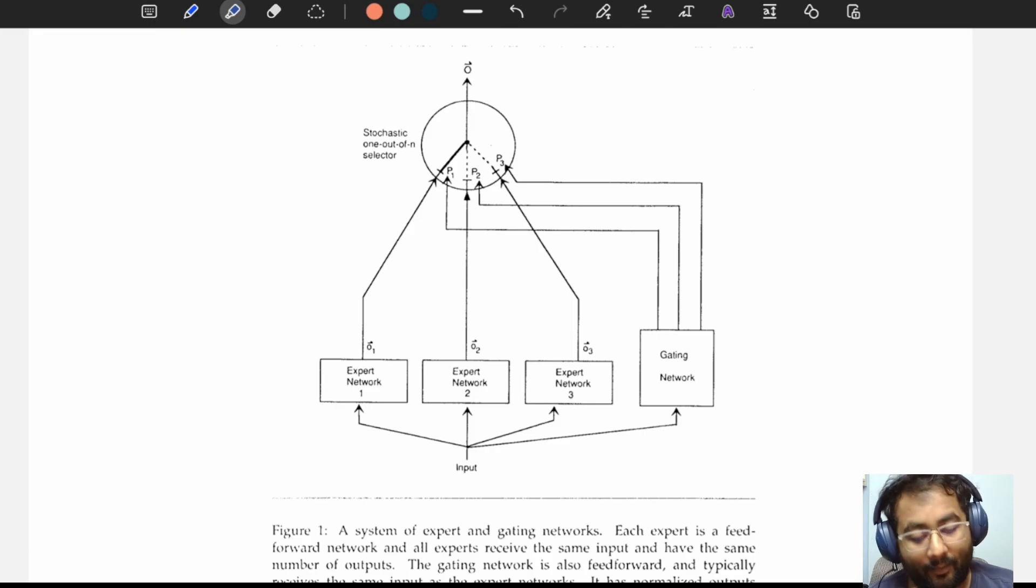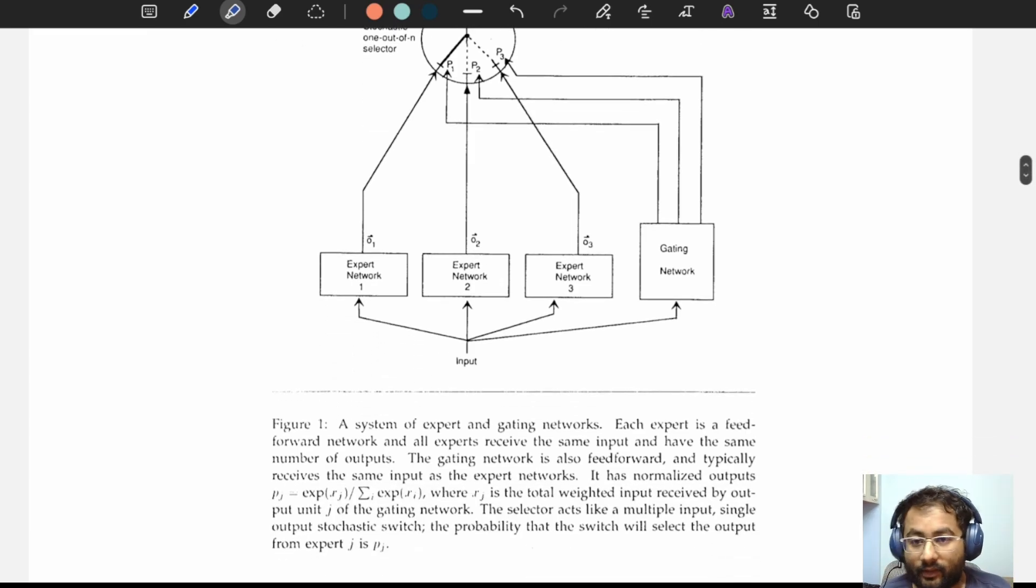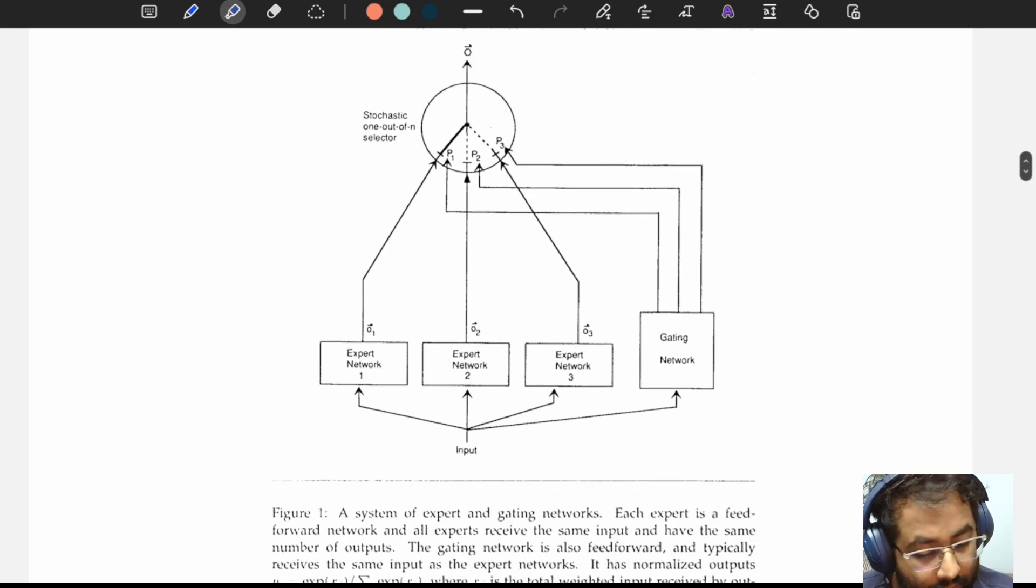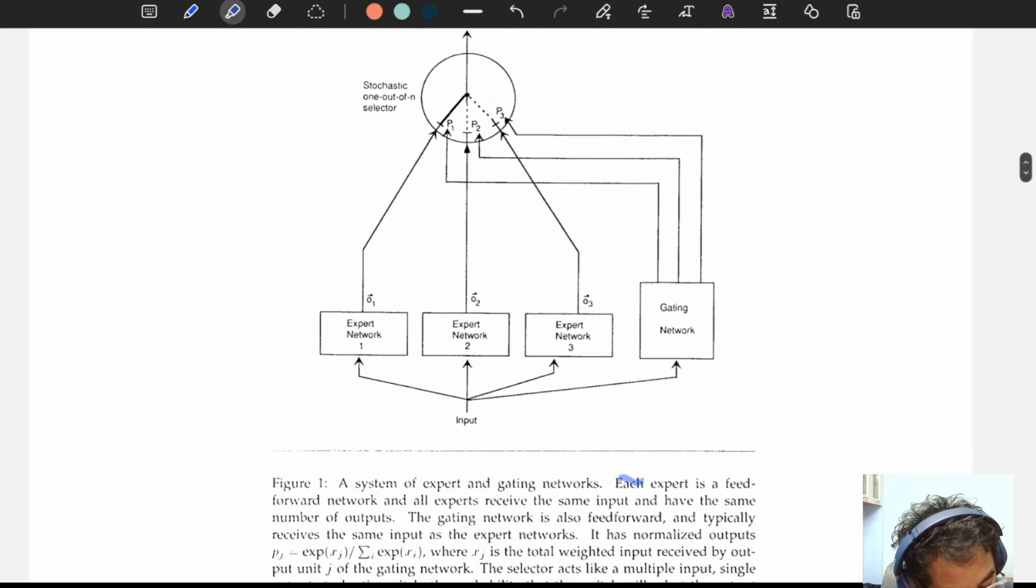This diagram given in the same paper drives home the concept very beautifully. There's this description written here which we'll read line by line. Each expert is a feed forward network. All the experts receive the same input and they have the same number of outputs. What this means is they receive the same input and they have the output of the same dimension, so the dimension of this is same as this, same as this.